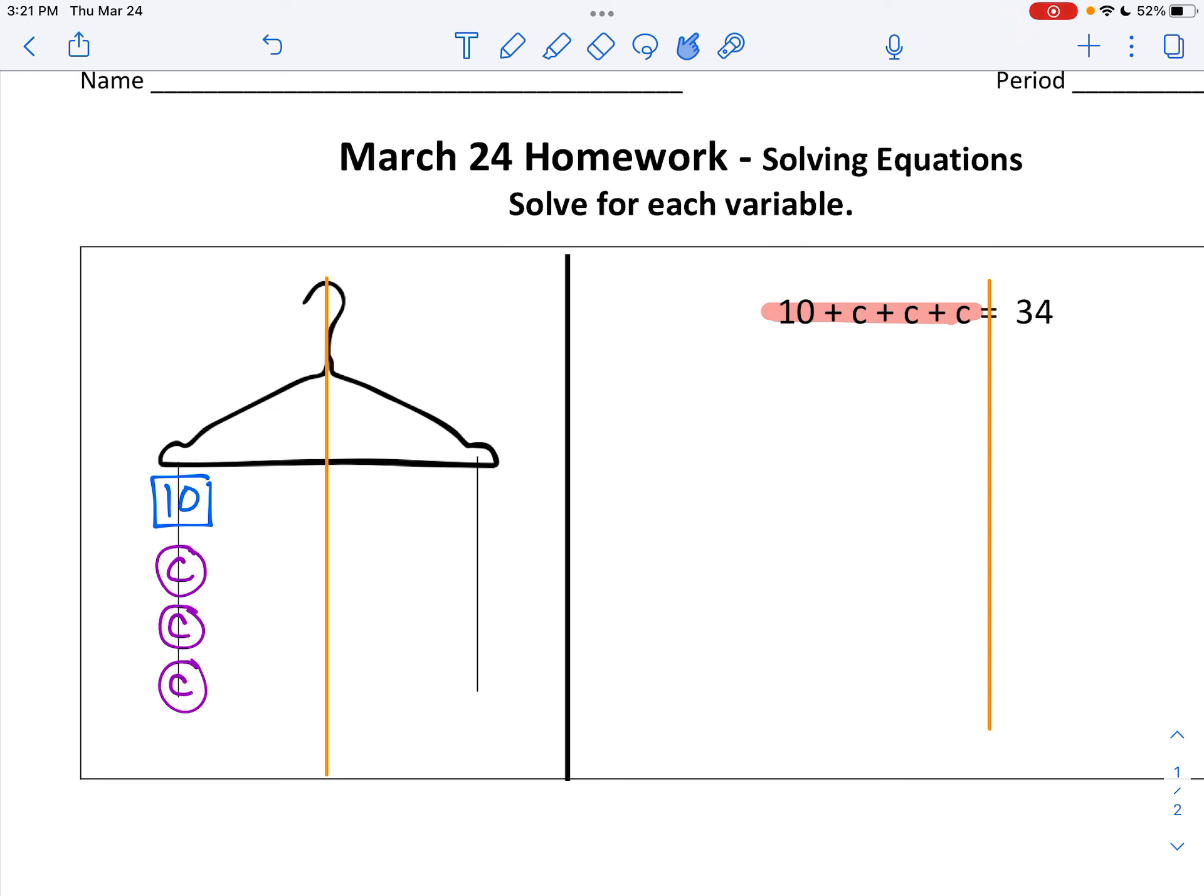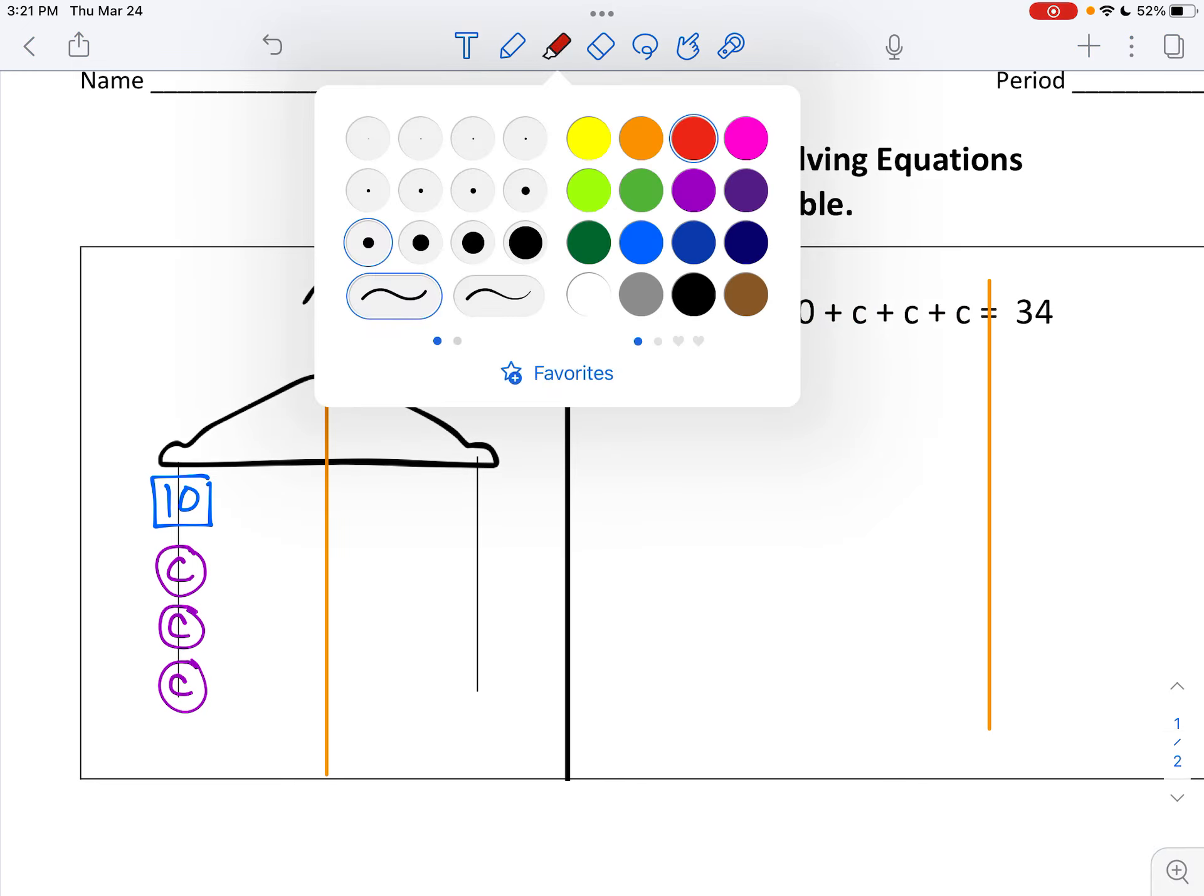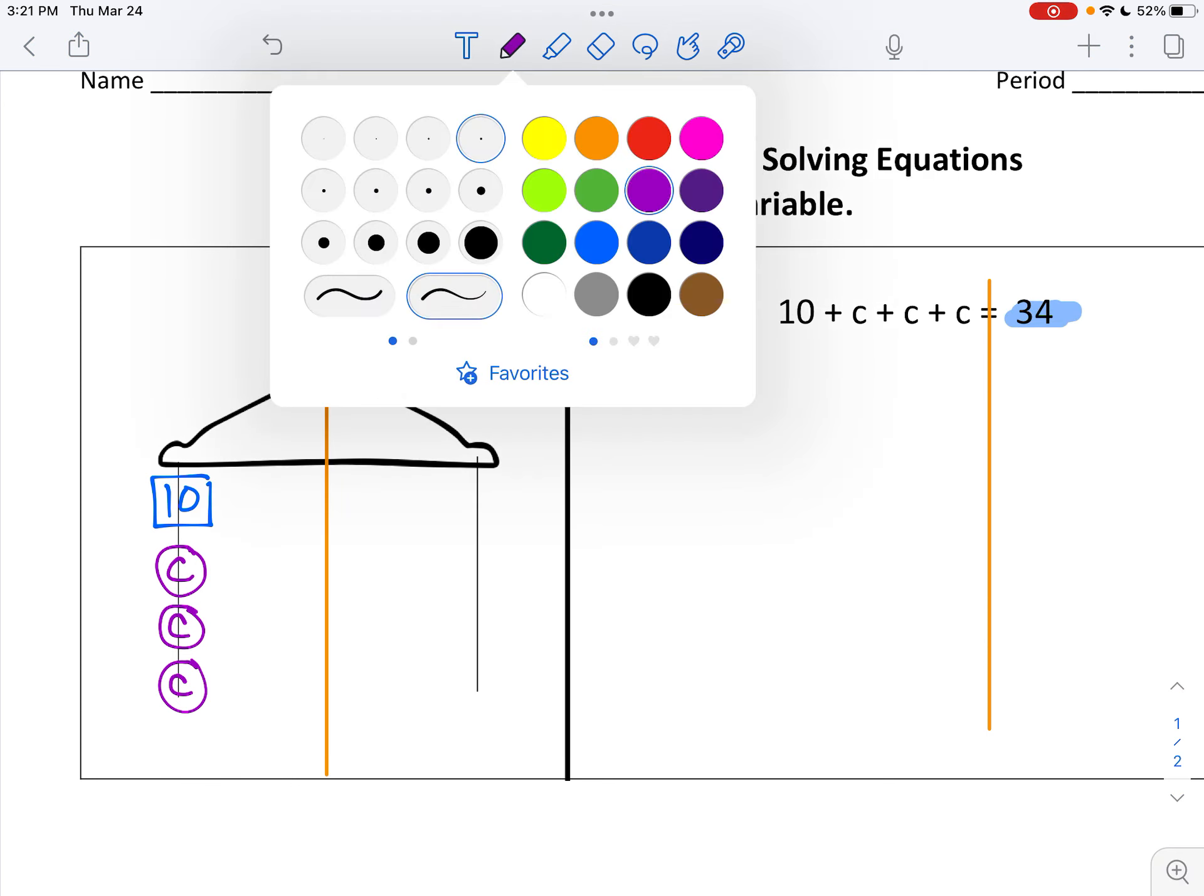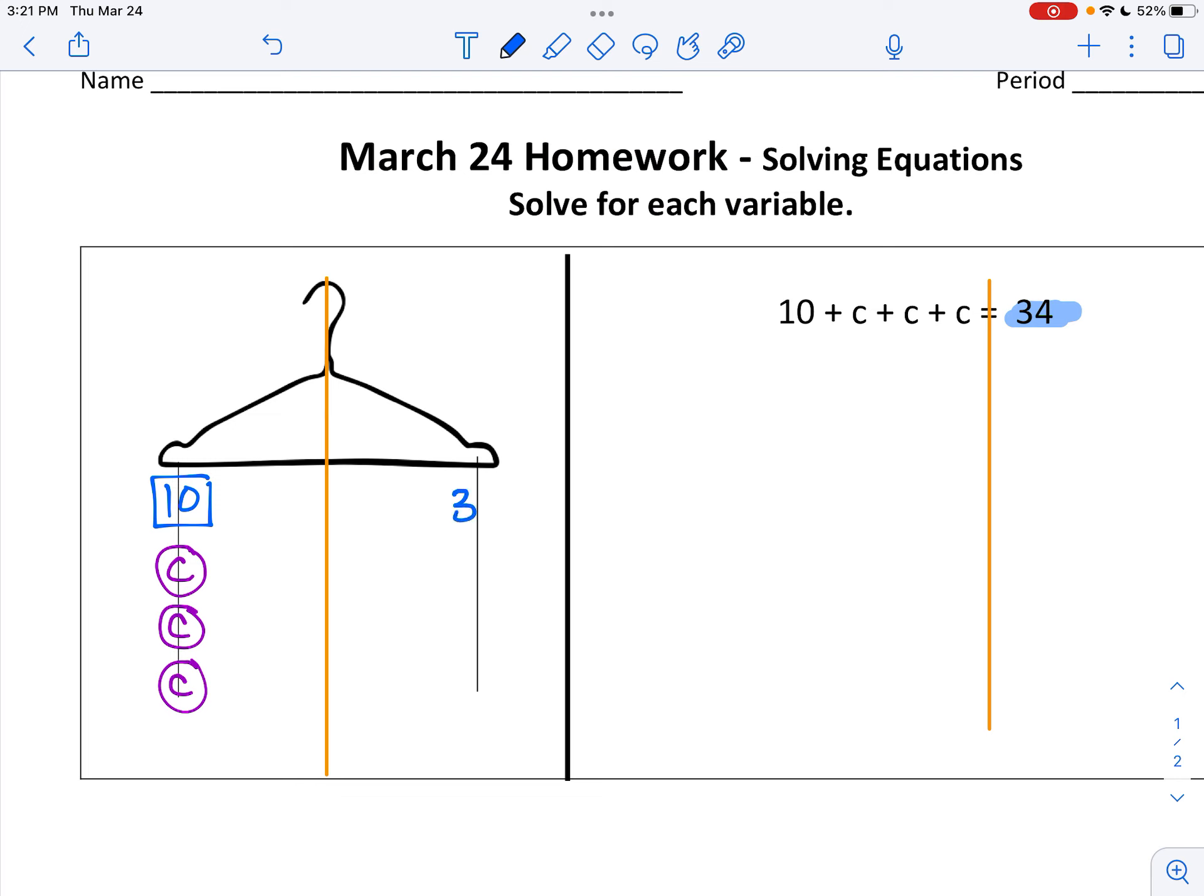10 plus C plus C plus C. On the other side is 34, so on the other side of my hanger, I'm going to write 34, put a box around it.